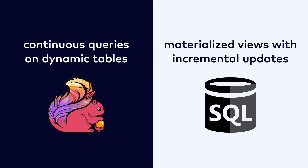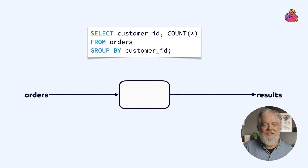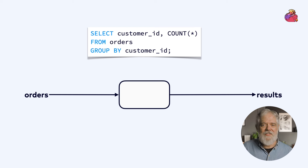Switching gears now to talk about how Flink SQL works, Flink executes what we in the Flink community describe as continuous queries on dynamic tables, or continuous queries on streams. This is very similar to incremental updates on materialized views. When Flink SQL is used in streaming mode, it treats a query like this one as a description of a continuous process — in this case, counting orders for each customer from a never-ending stream of orders. Flink compiles this query into a new Flink application, and then streams the order events through that application in much the same way that a database would scan through an orders table to collect results.